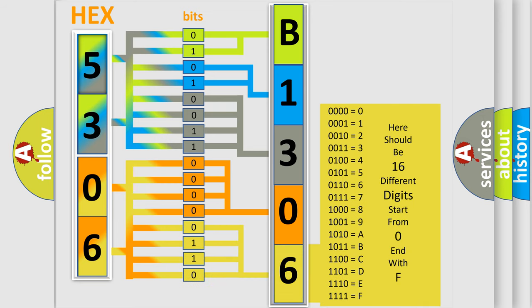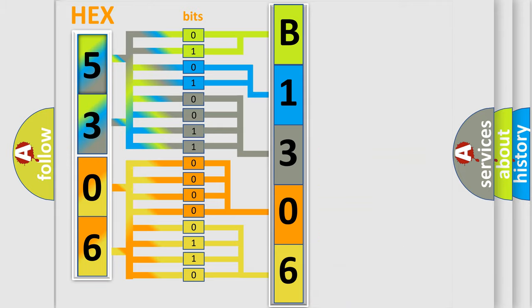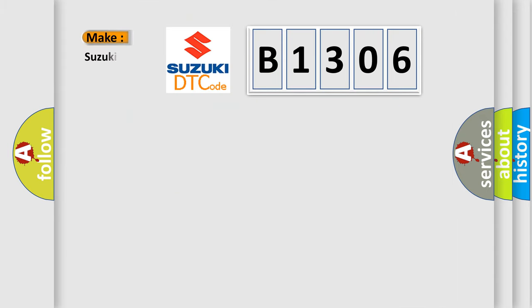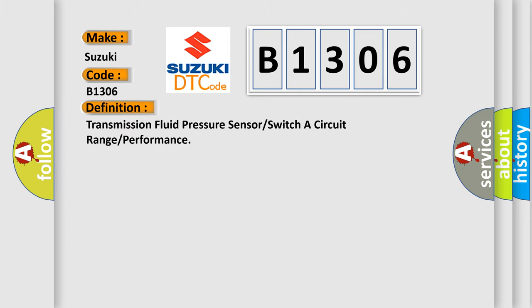We now know in what way the diagnostic tool translates the received information into a more comprehensible format. The number itself does not make sense to us if we cannot assign information about what it actually expresses. So, what does the diagnostic trouble code B1306 interpret specifically for Suzuki car manufacturers? The basic definition is: Transmission fluid pressure sensor or switch A circuit range or performance.